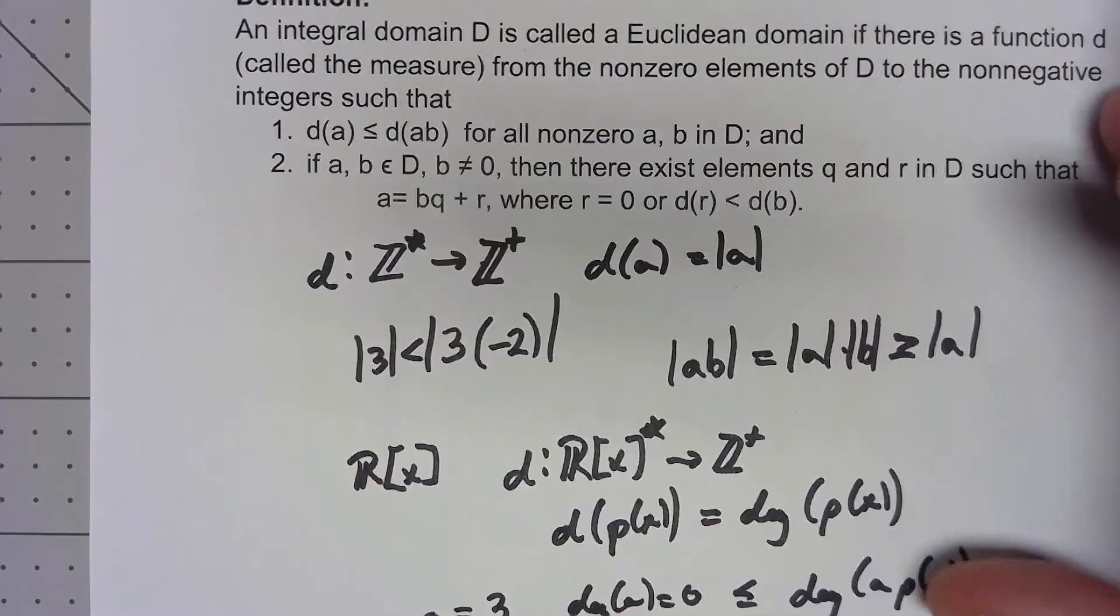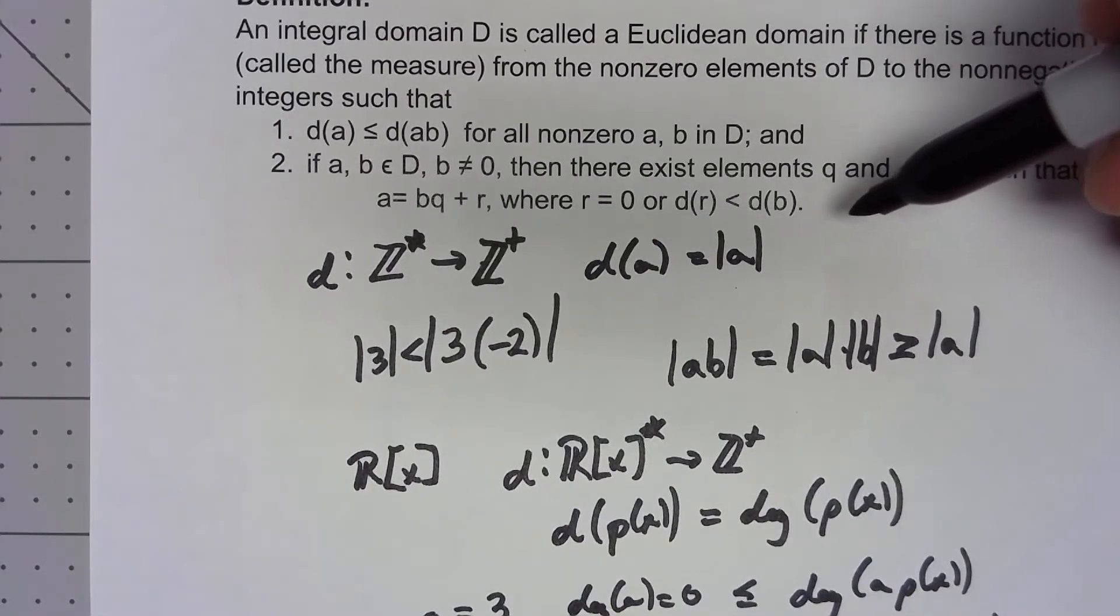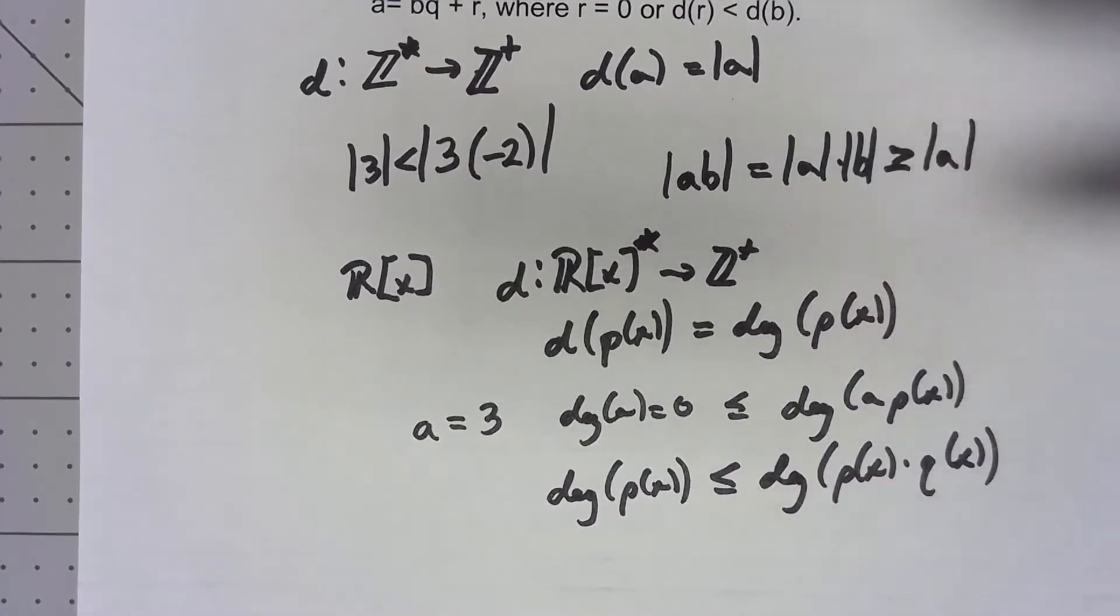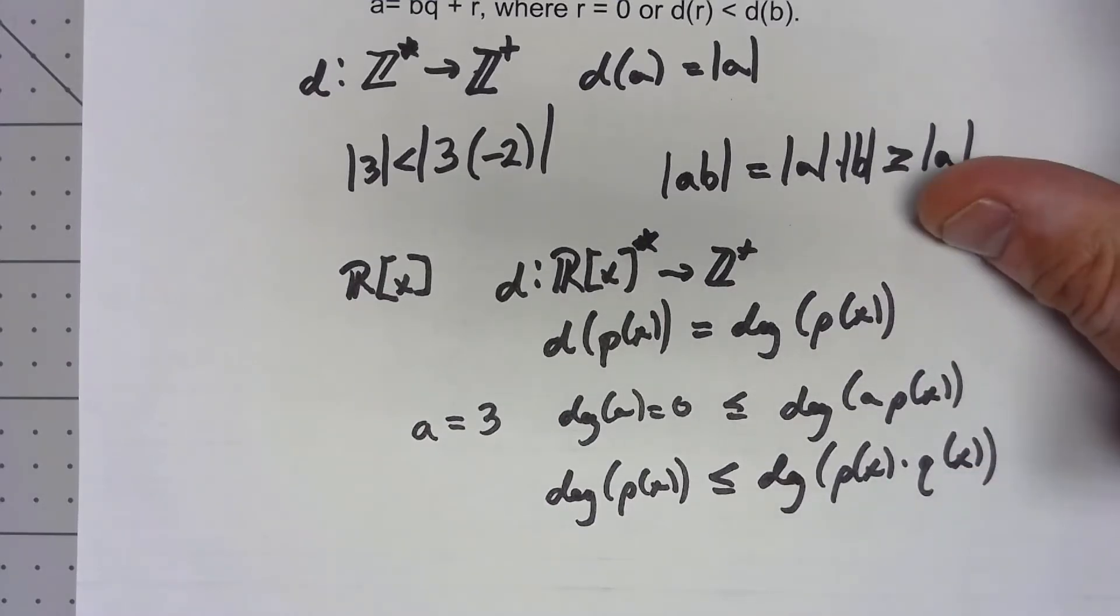And again we know we've got this division algorithm kind of thing. We did that specifically before so we know that this thing is going to be a Euclidean domain.